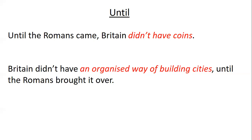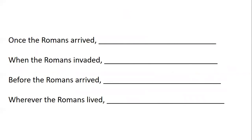We've almost done — the last few subordinating conjunctions I've picked out are: once, when, before, and wherever. I want you to finish these yourselves: 'Once the Romans arrived...' — what happened? 'When the Romans invaded...' — what did they change or bring? 'Before the Romans arrived...' — what didn't we have? And 'Wherever the Romans lived...' — what did they build or bring? Have a go, and hopefully you'll have a nice bank of sentences ready for writing your information text tomorrow.